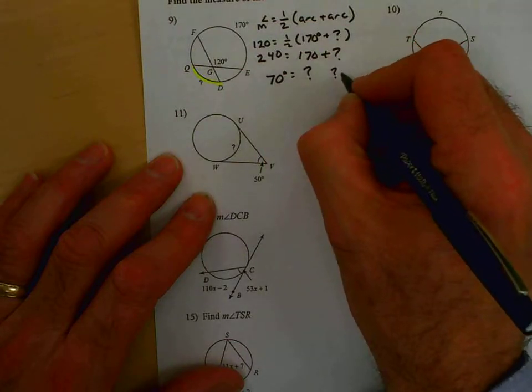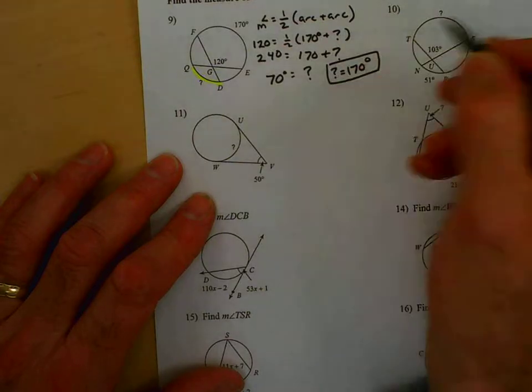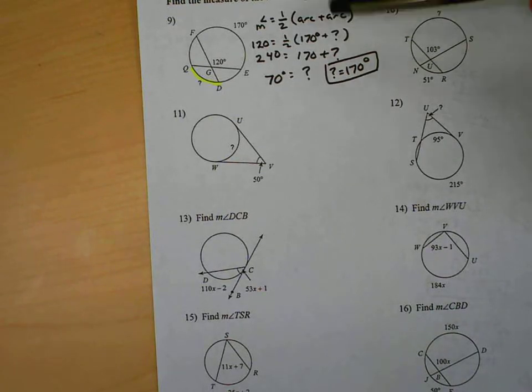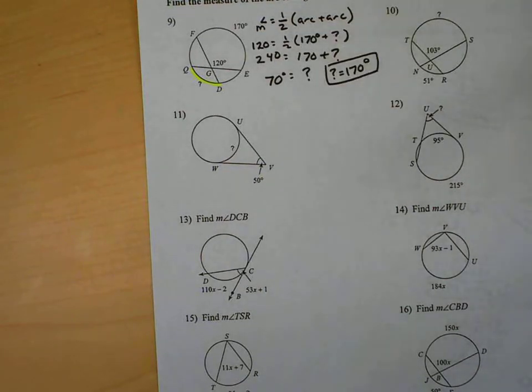So, question mark equals 70. And that was strictly from our equation measure of angle equals one half arc plus arc. I set it up. Doubled both sides. And subtracted 170 from both.